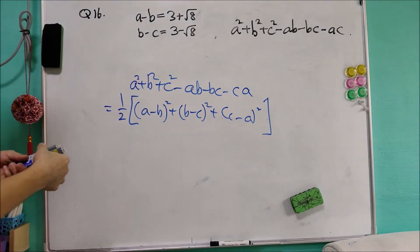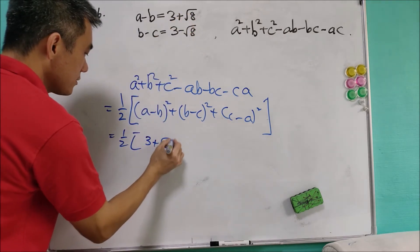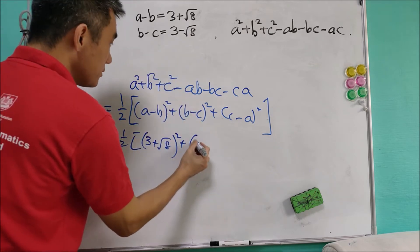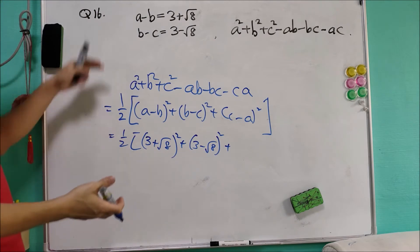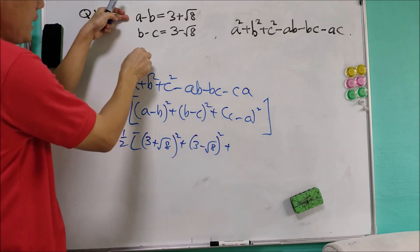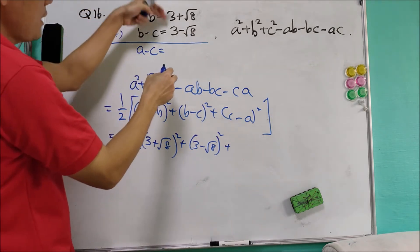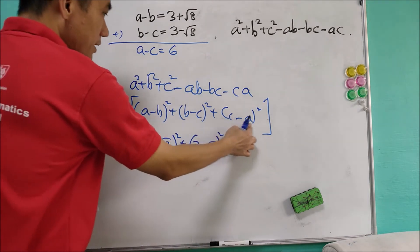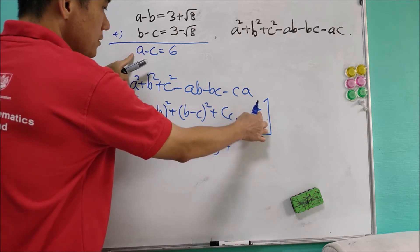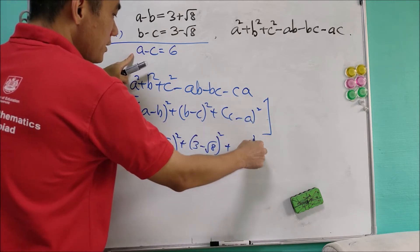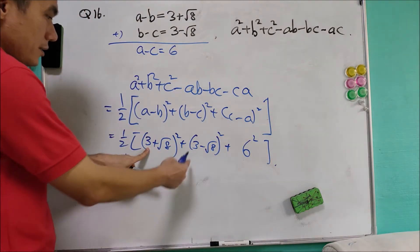So what we have is: half of (a minus b) squared — where a minus b is 3 plus square root of 8 — plus (b minus c) squared — where b minus c is 3 minus square root of 8 — plus (c minus a) squared. We can find c minus a by adding the two given expressions: a minus c equals 6, so c minus a equals negative 6. But since it is squared, it makes no difference whether it is 6 or negative 6.